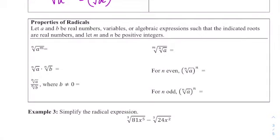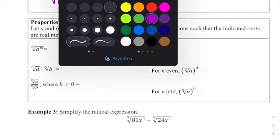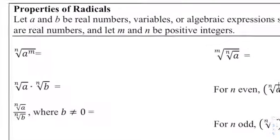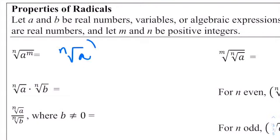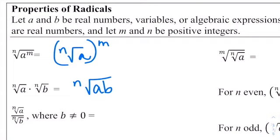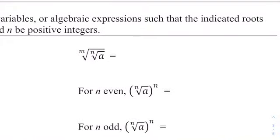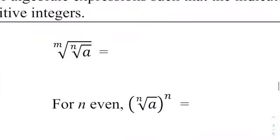Let's look at the properties of radicals. The Nth root of A to the M is the same as the Nth root of A raised to the M. When we combine the Nth root of A times the Nth root of B — they have the same Nth root — that's the Nth root of A times B. For a ratio, the Nth root of A over the Nth root of B equals the Nth root of A divided by B, as long as B doesn't equal zero. And the Nth root of the Nth root of A is the N times N root of A.